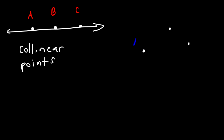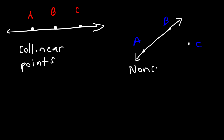The other three points are non-collinear because we cannot draw one line that connects all of them. We can draw a line between two points, so A and B are collinear. But A, B, and C are not collinear because we can't put those three points on a single line. So these are known as non-collinear points.